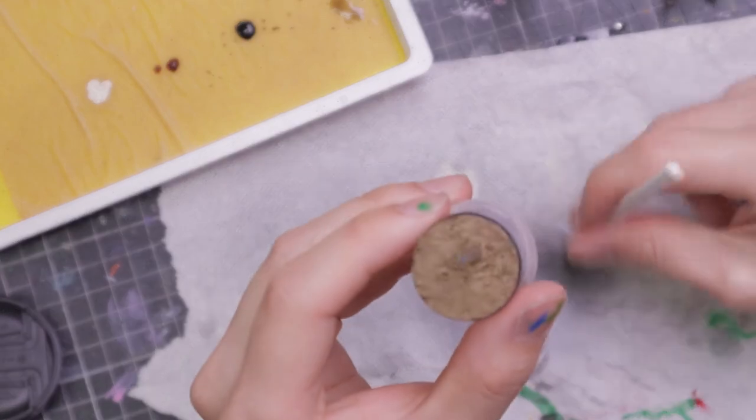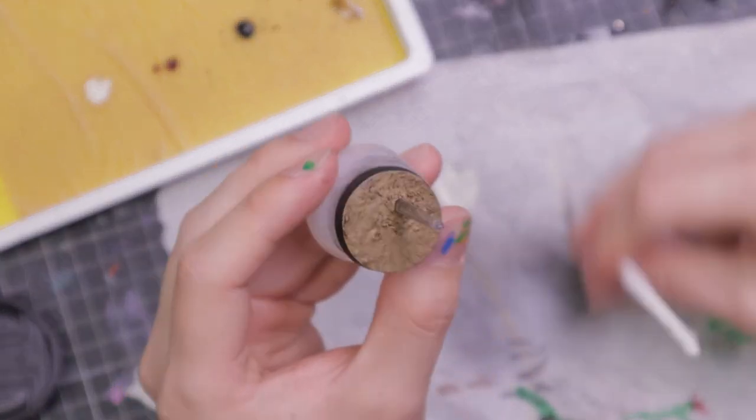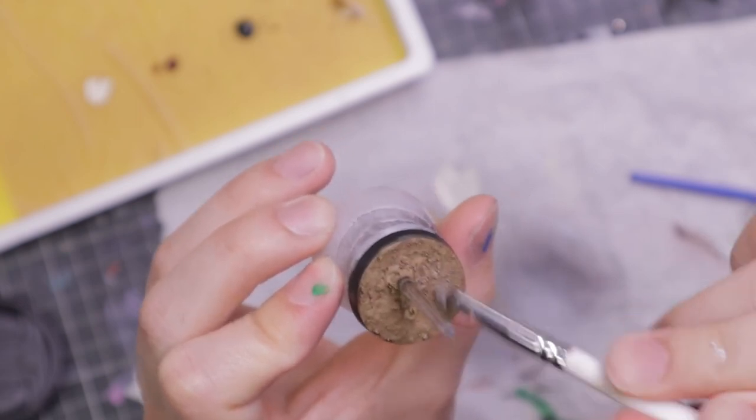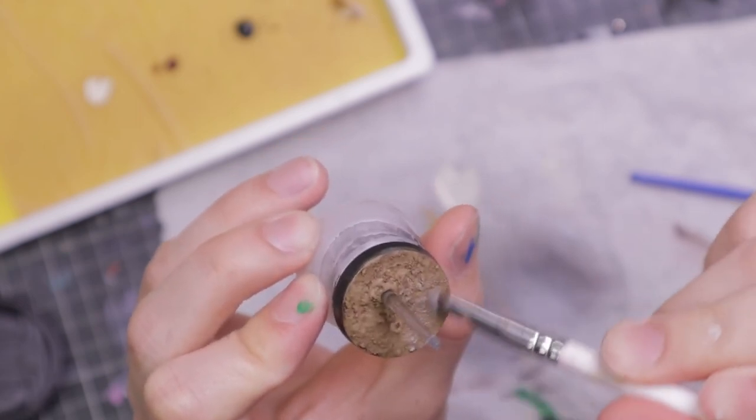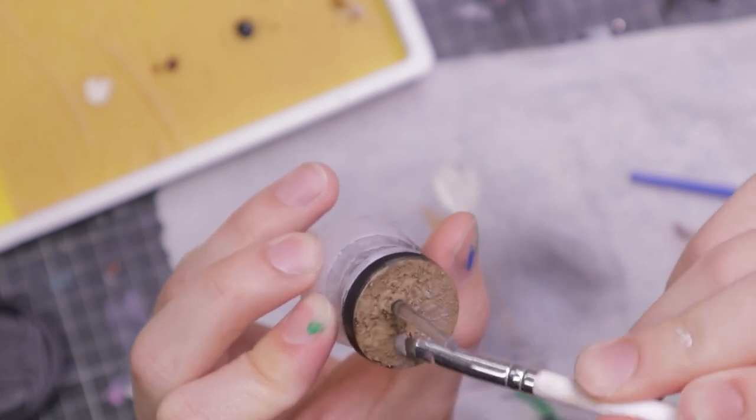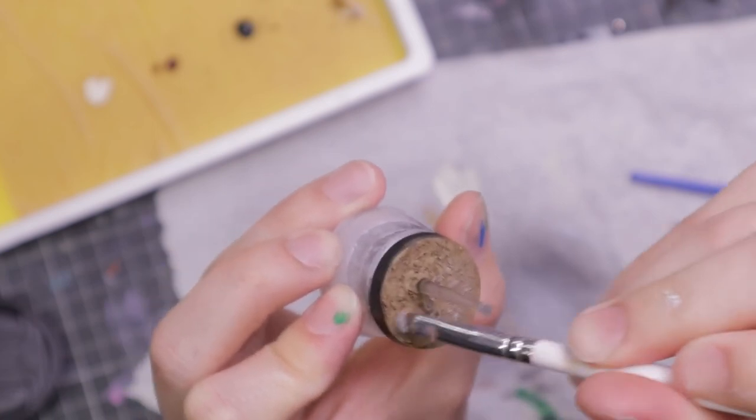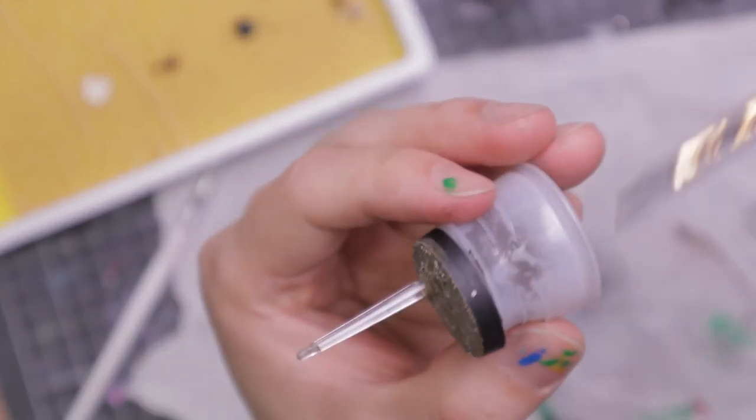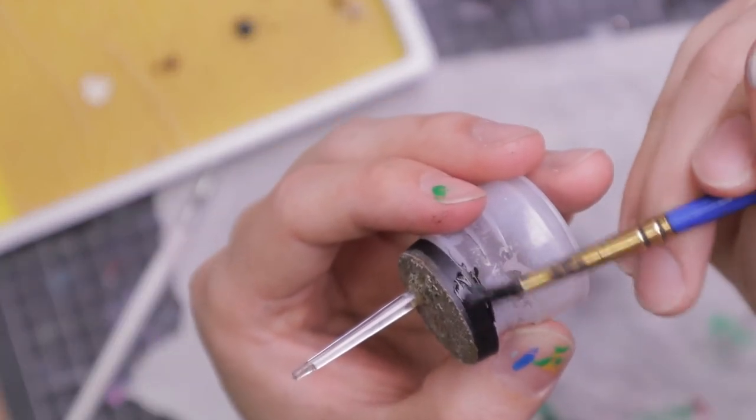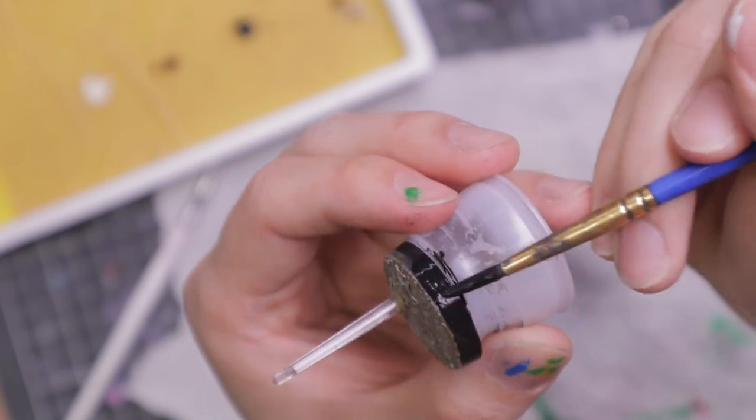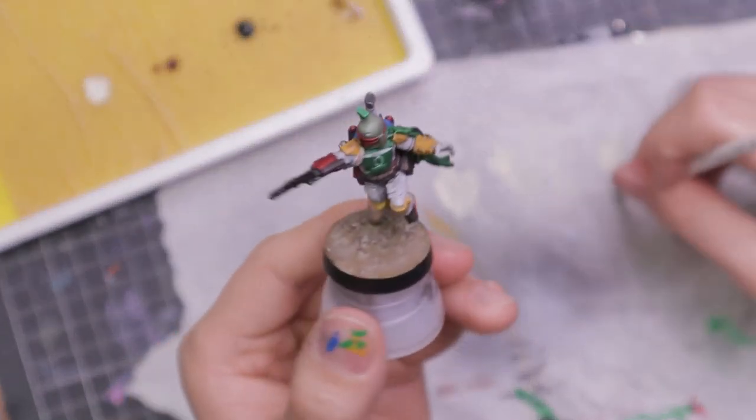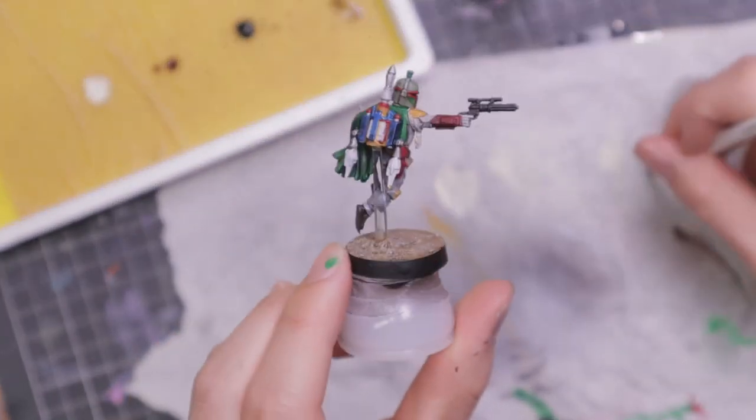Now I'm going to dry brush to highlight the ground. I'll paint the rims black to make it look clean. Now that Boba Fett is back on the base, I'm going to do some extra dry brushing on him to give him a nice highlight and also to weather him a bit.